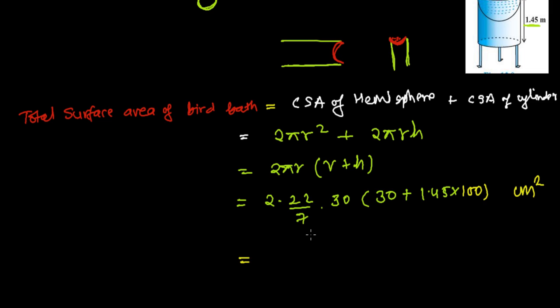I'm using calculator now. 2 times 22 times 30 is 1320, divided by 7 times - 1.45 times 100 is 145 plus 30, that's 175.